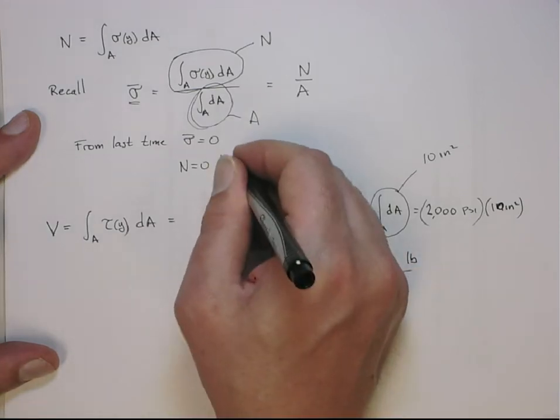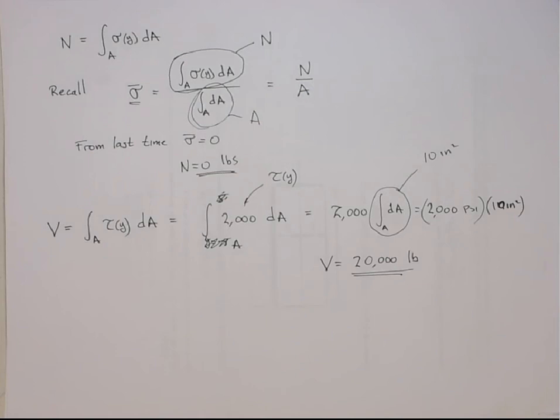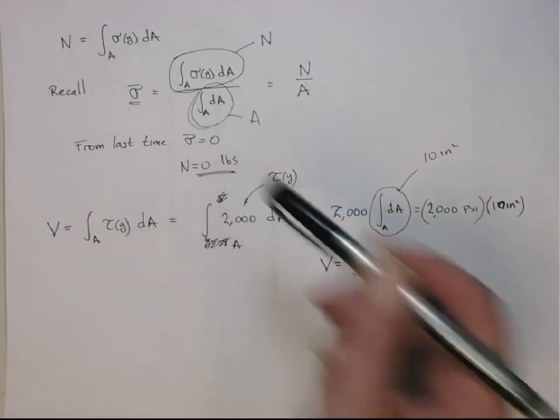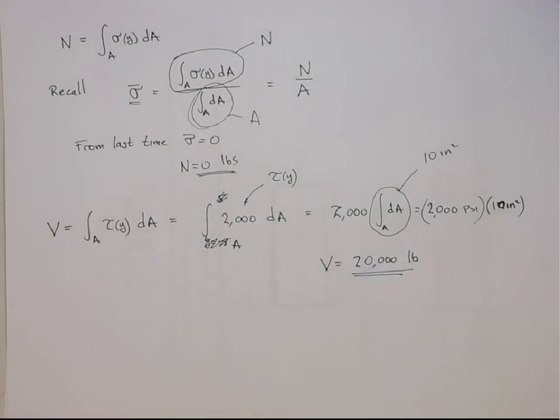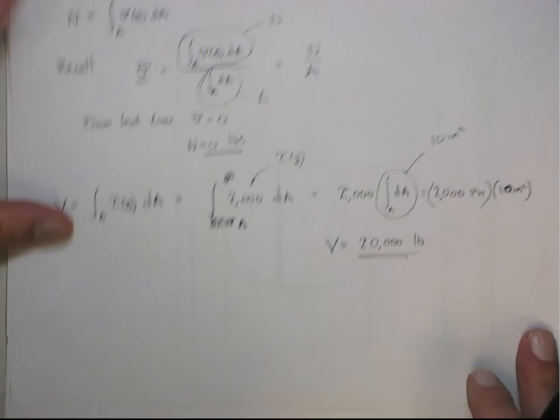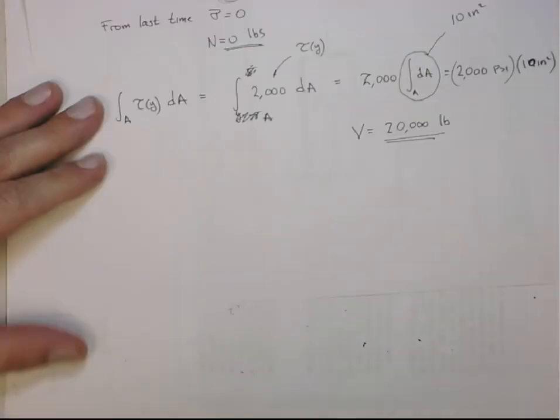So the normal internal reaction force is zero in this case, and the internal reaction shear force is 20,000 pounds. The last quantity I want to do is the moment, and this is one that we haven't calculated for, so this will be a little different.